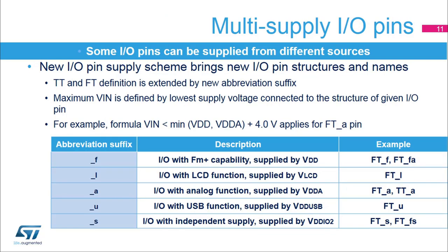A new multi-supply scheme of I/O pins brings new I/O pin structures. Previously used naming FT-TT has been extended by abbreviation suffixes to highlight alternate supply sources for each FT and TT I/O pin. Previously used name FT-F for FM-plus capable pins has been transformed to FT-T underscore F. The new underscore L suffix marks pins supplied through LCD supply; underscore A marks pins supplied by analog supply; underscore U is used for pins supplied from USB supply; and underscore S identifies pins within the independent VDD IO2 supply domain. The absolute maximum rating for each I/O pin is defined by the lowest voltage of the supplies listed for that pin.